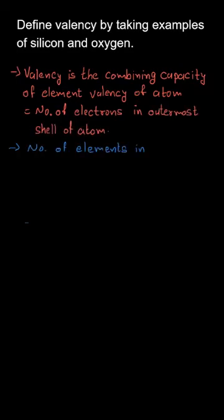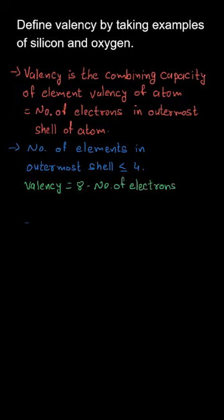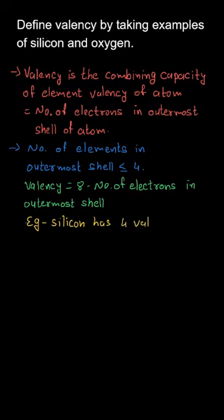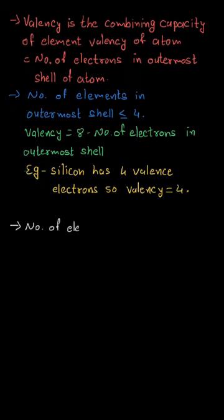For example, if the number of elements in the outermost shell are less than or equal to four, we can calculate valency by taking eight minus the number of electrons present in the outermost shell. In case of silicon, it has four valence electrons, so valency is eight minus four, which equals four.